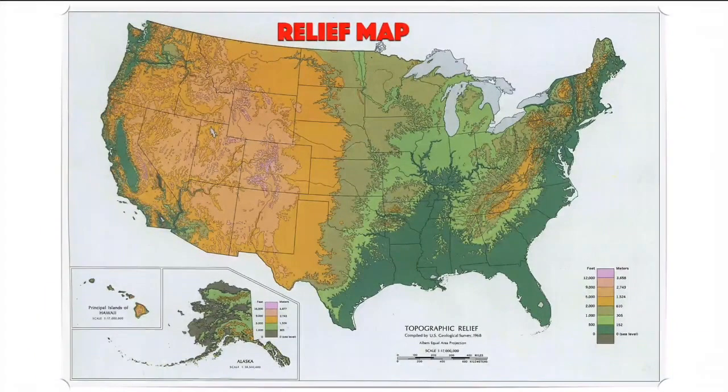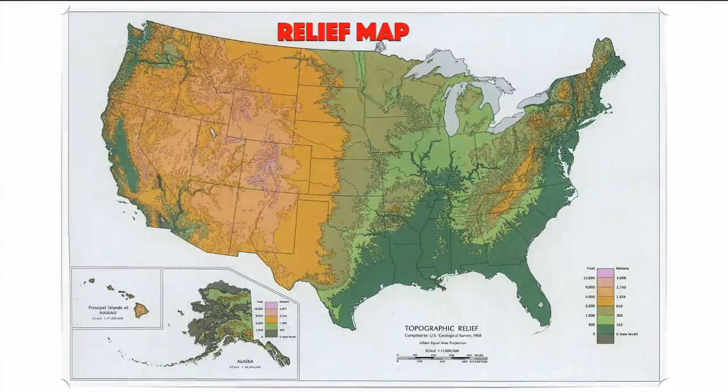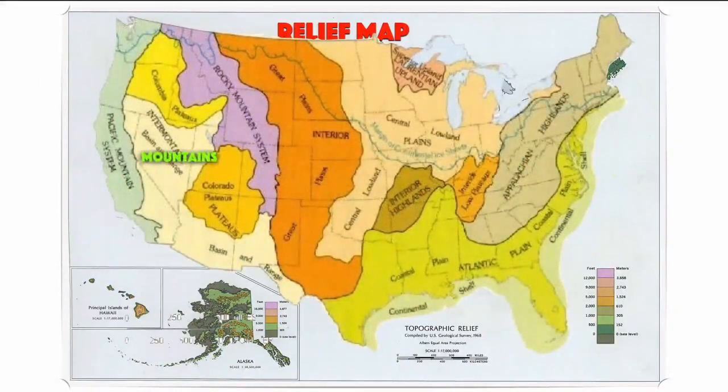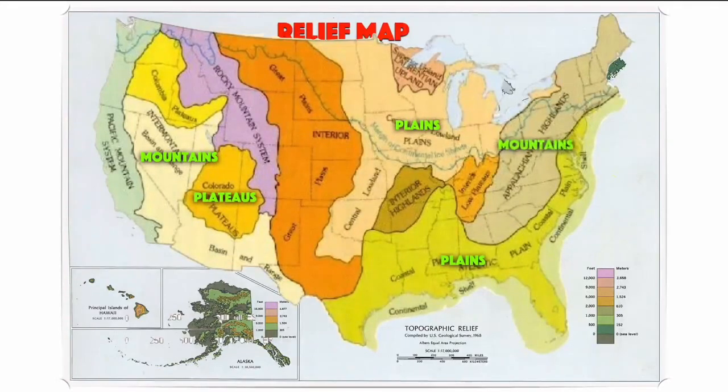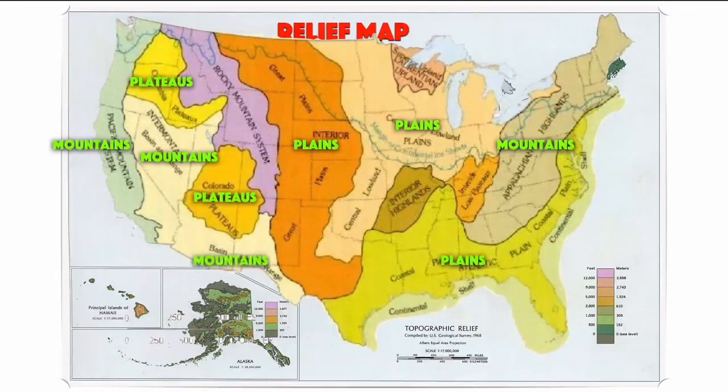A relief map shows different elevations using color codes, and these color codes are correlated with different landscapes. The United States is comprised of all three types of landscape, with mountainous areas to the west and east and flat plains in the center.